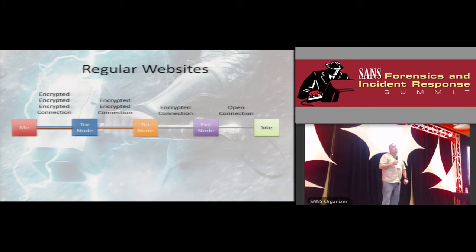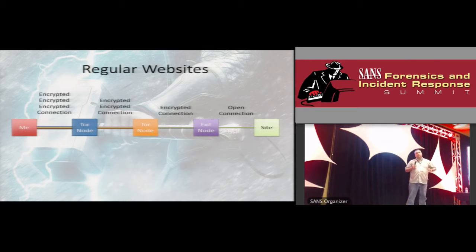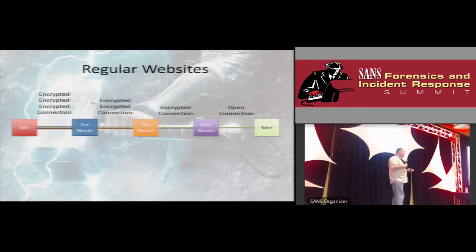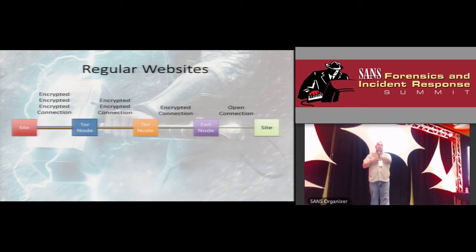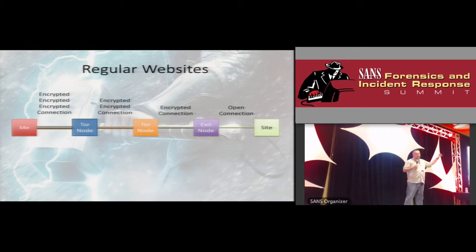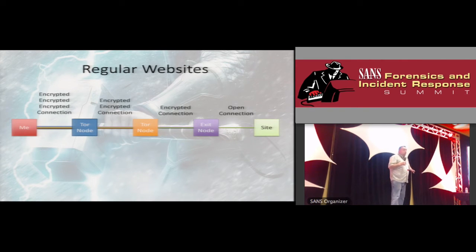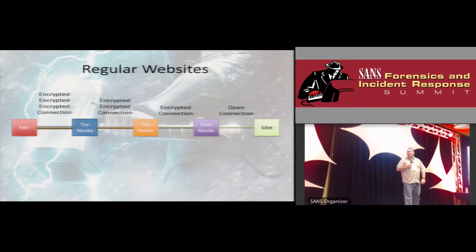What Tor does is give you three what are called nodes: an entry node, a mid node, and an exit node. Anything after the exit node is going to be completely unencrypted — that's the SSL boundary — but Tor encrypts everything back from that point. So if you intercept traffic between the exit node and the site, you know what they're trying to get, but you don't know where that traffic is going back to.